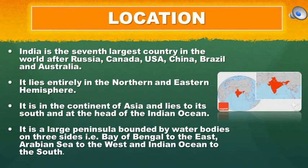India is the 7th largest country in the world, after Russia, Canada, USA, China, Brazil and Australia. It lies entirely in the Northern and Eastern Hemisphere. It is in the continent of Asia and lies to its south at the head of the Indian Ocean. It is a large peninsula bounded by water bodies on three sides: Bay of Bengal to the east, Arabian Sea to the west, and the Indian Ocean to the south.